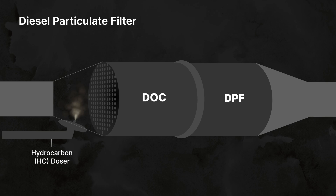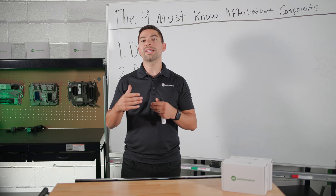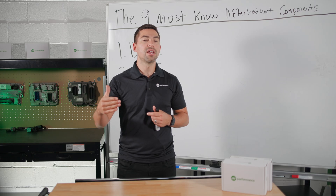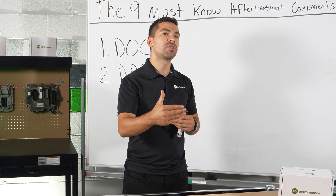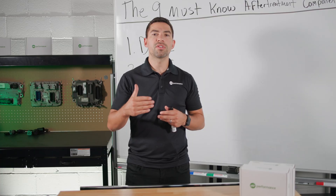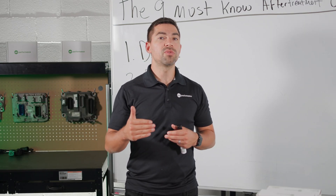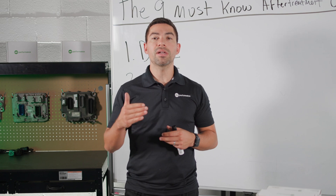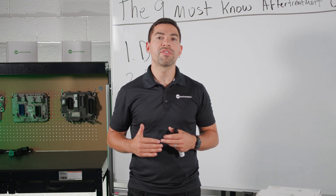Over time, ash must be removed by cleaning the DPF filter. The DPF filter reaches temperatures up to 1100 degrees Fahrenheit. If your truck is not generating enough heat to start burning off that soot, you might have to look upstream because there might be an issue with your seventh injector or your DOC filter not getting the temperature it needs.